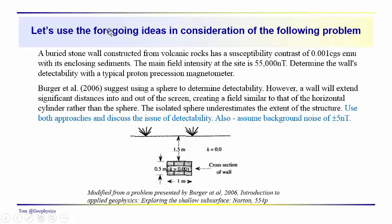I mentioned we do a problem in the last video. In this problem, we've got a buried stone wall. This problem comes from a problem presented by Berger, Sheehan and Jones in their introduction to applied geophysics text. It's been modified, but it's similar. It's an archaeological exploration problem, 0.001 CGS units. The main field intensity at this location is 55,000 nanoteslas.